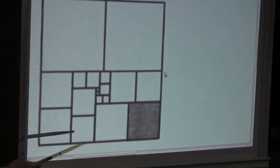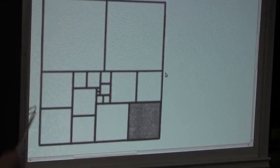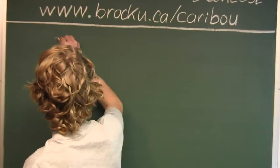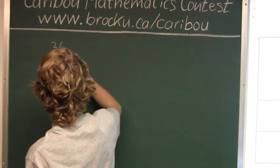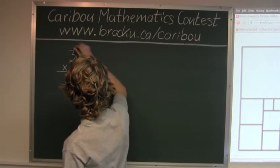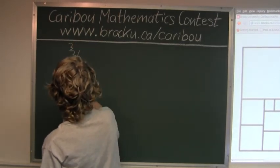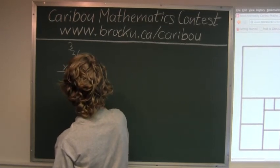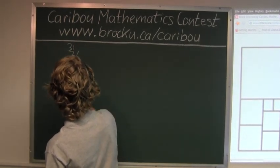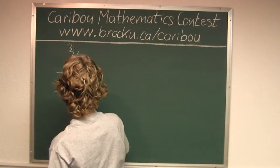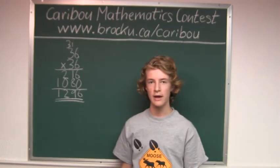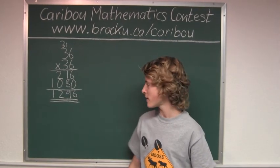Now, since we know it is a square and we're finding the area, we would do 36 times 36. Now, we know the area of the largest square is 1,296.